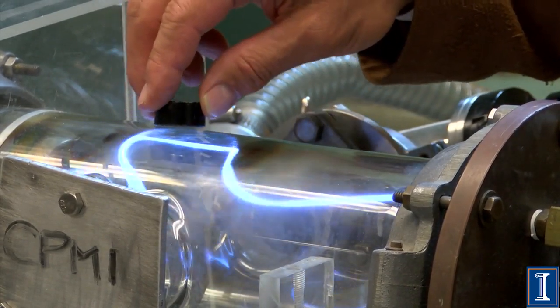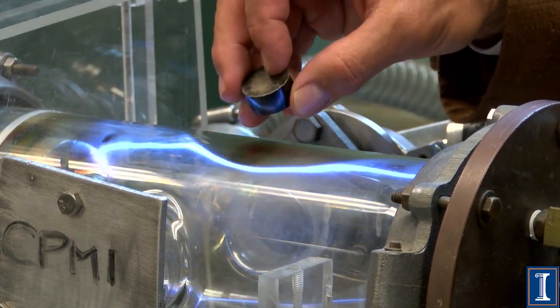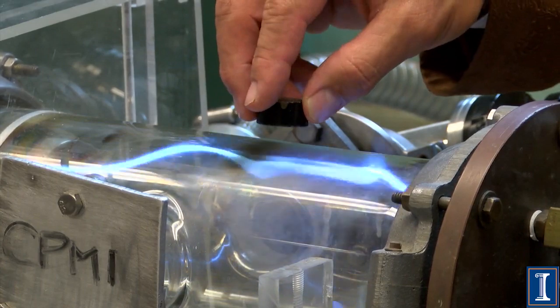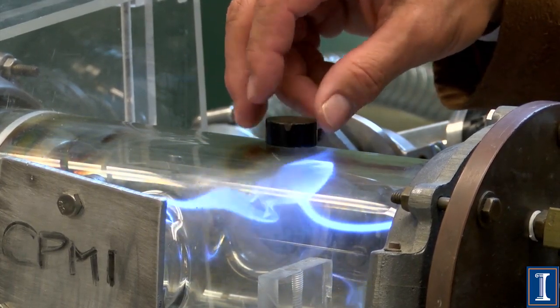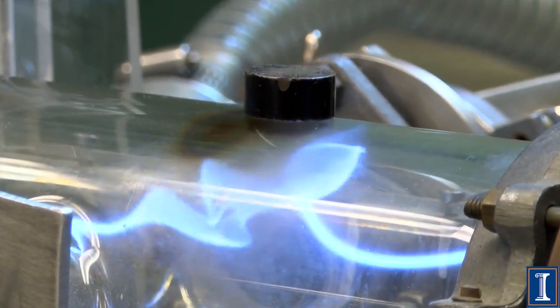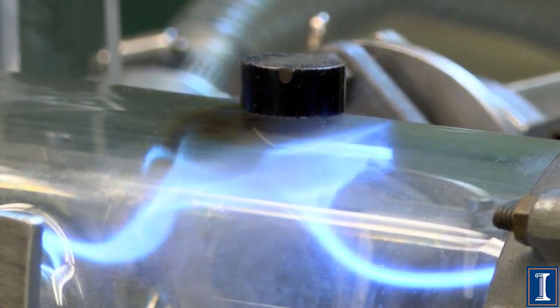So I can actually shape the magnetic field. Turn the magnetic field this way, it goes one direction. Turn it the other way, it goes the other direction. This property of being able to affect where plasmas go using a magnetic field is how we are going to make fusion energy work.